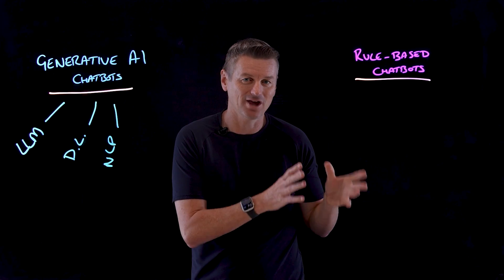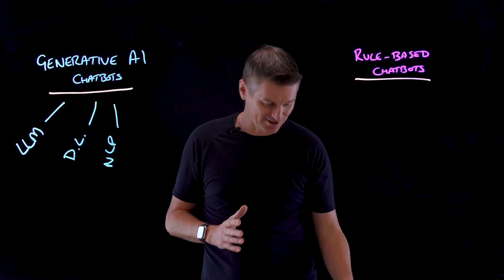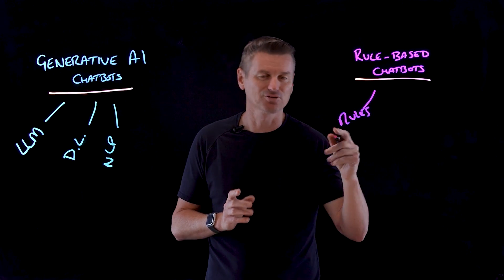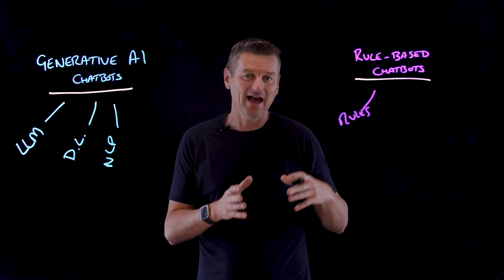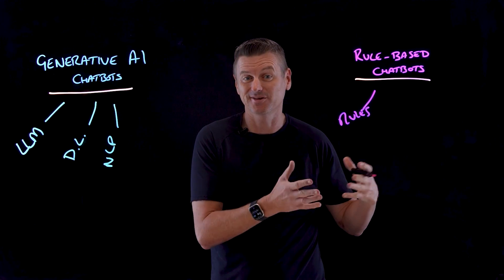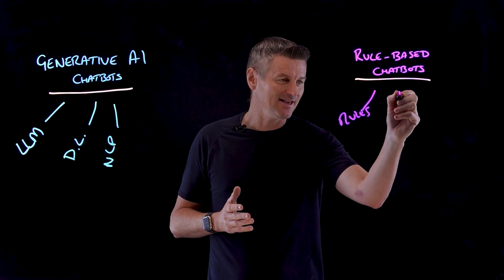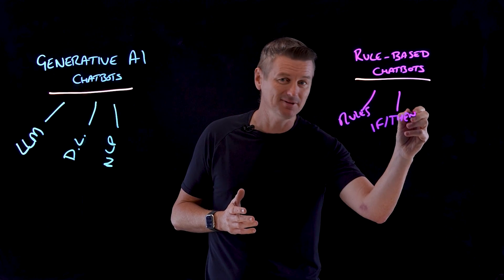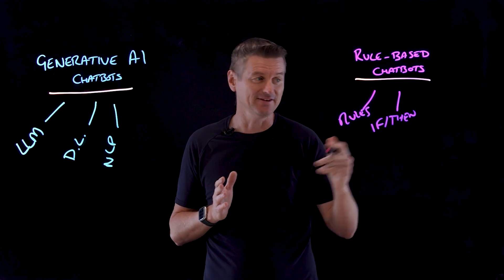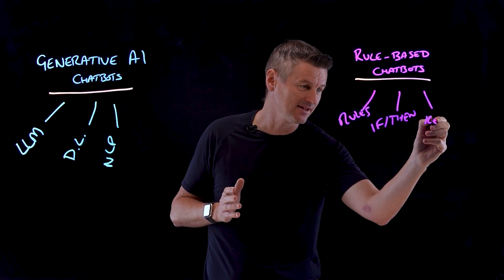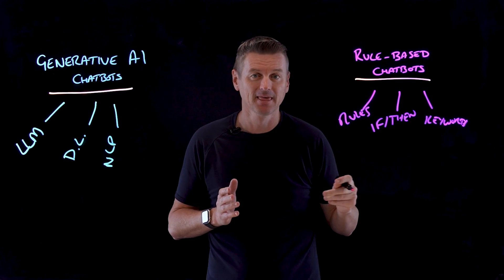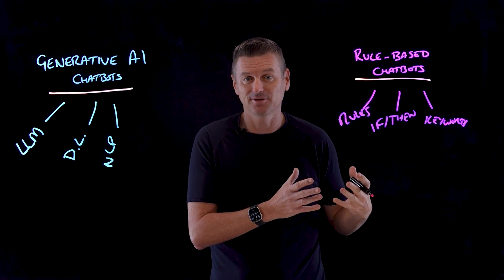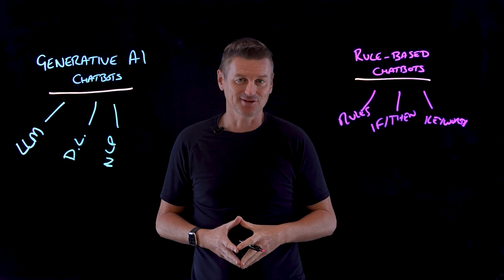On the other hand, rule-based chatbots adhere to a collection of predetermined rules — they are very much rules-engine based — and use those rules for producing replies to user inputs. They utilize a sequence of if-then statements to verify the presence of specific keywords that are sent into the chatbot.